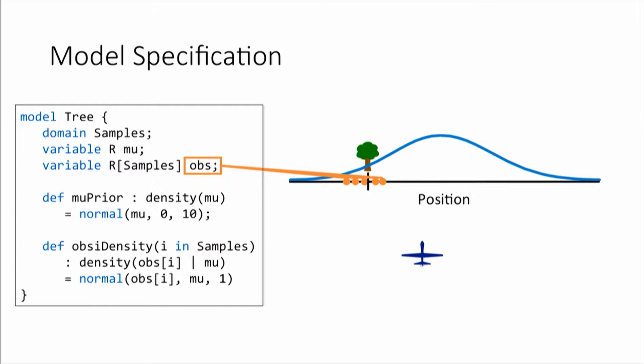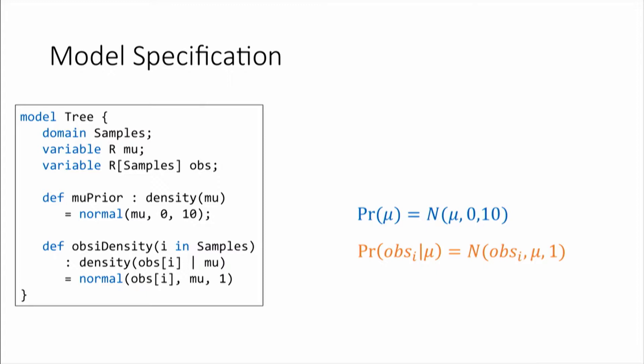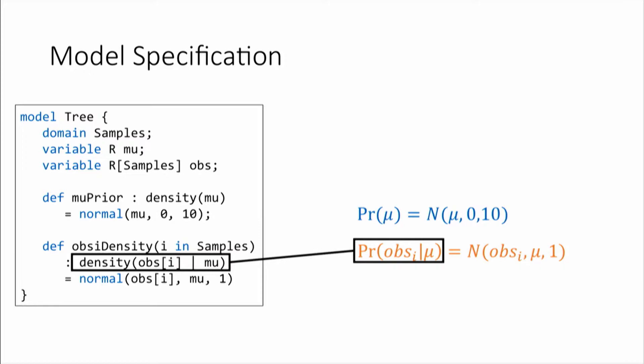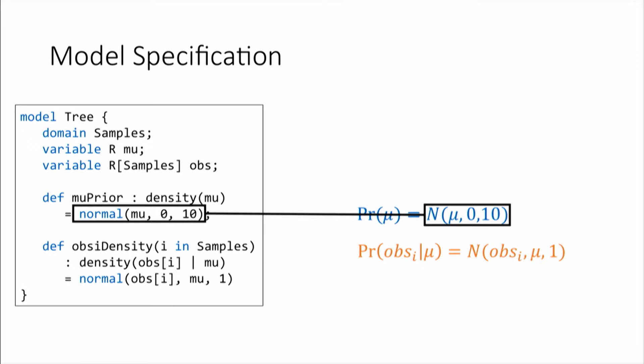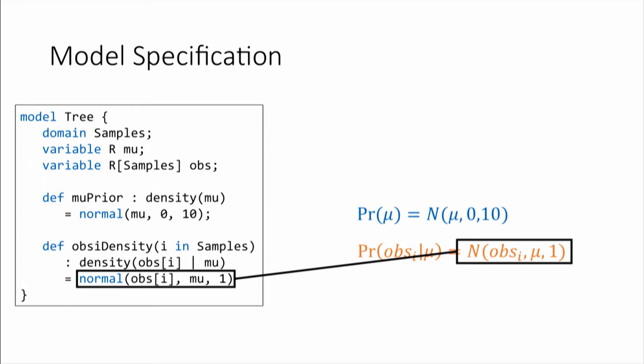After writing down the random variables, I write down densities on them — this is really just taking mathematical notation and giving it syntax. The role of each density is captured by its type: the prior has type 'density mu', and the likelihood has type 'density obs[i] given mu'. The actual value of the density is given by the body in Shuffle: a normal distribution with mean 0 variance 10 for the prior, and a normal distribution with mean mu variance 1 for the likelihood.